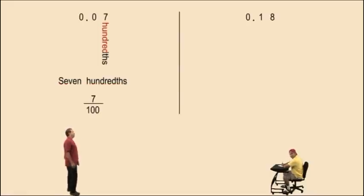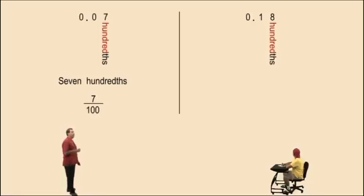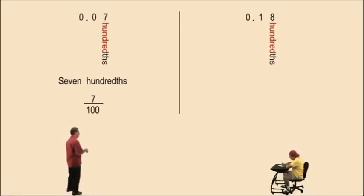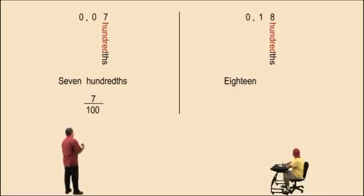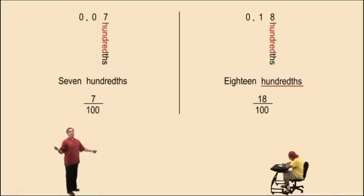Let's do another one. Here we have ones, tenths, hundredths. Notice the eight is the rightmost digit and it's in the hundredths place. So how do we say this number correctly? We have eighteen hundredths. How do we write it as a fraction? Eighteen hundredths. There you go.